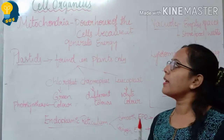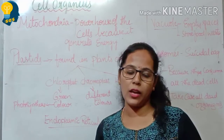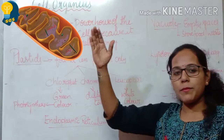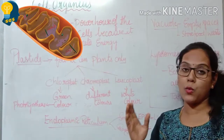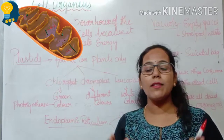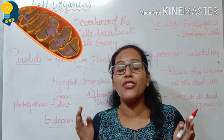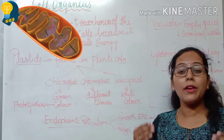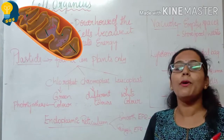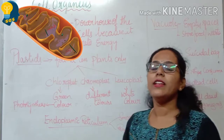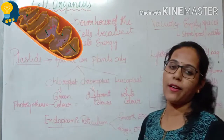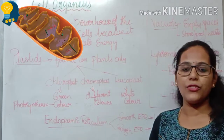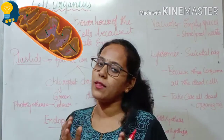The next cell organelle is the mitochondria. Mitochondria is considered to be the powerhouse of the cell because it generates the energy required for the cell to perform its activities. All that energy is released by the mitochondria, which helps in generating energy — hence it is called the powerhouse of the cell.